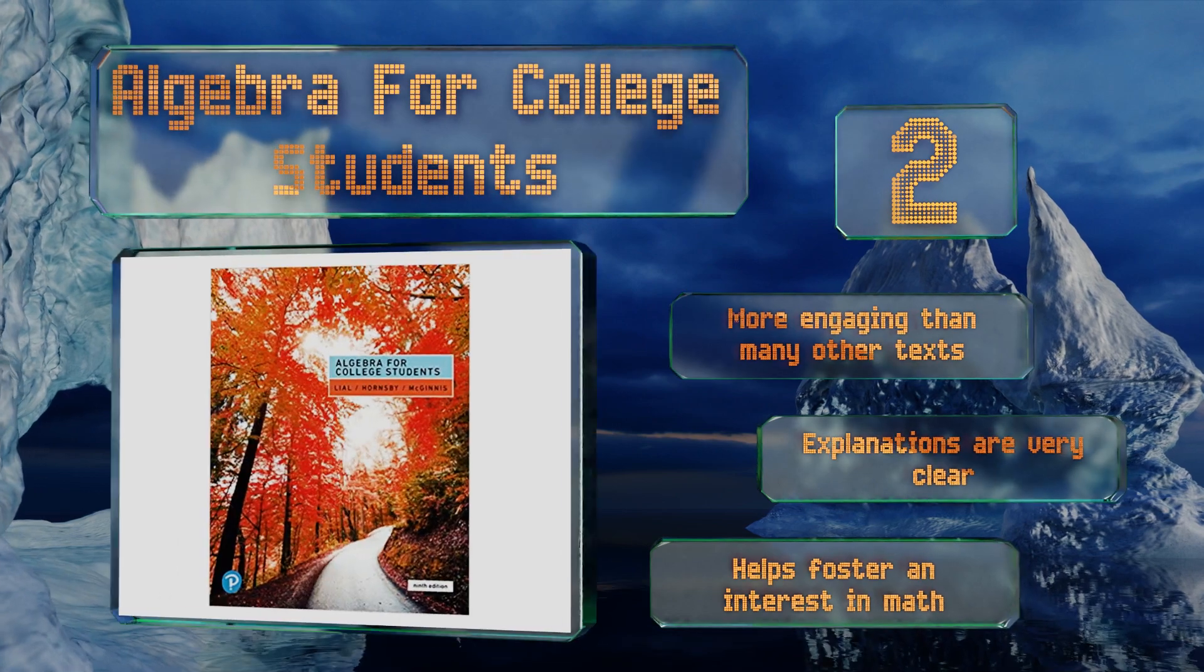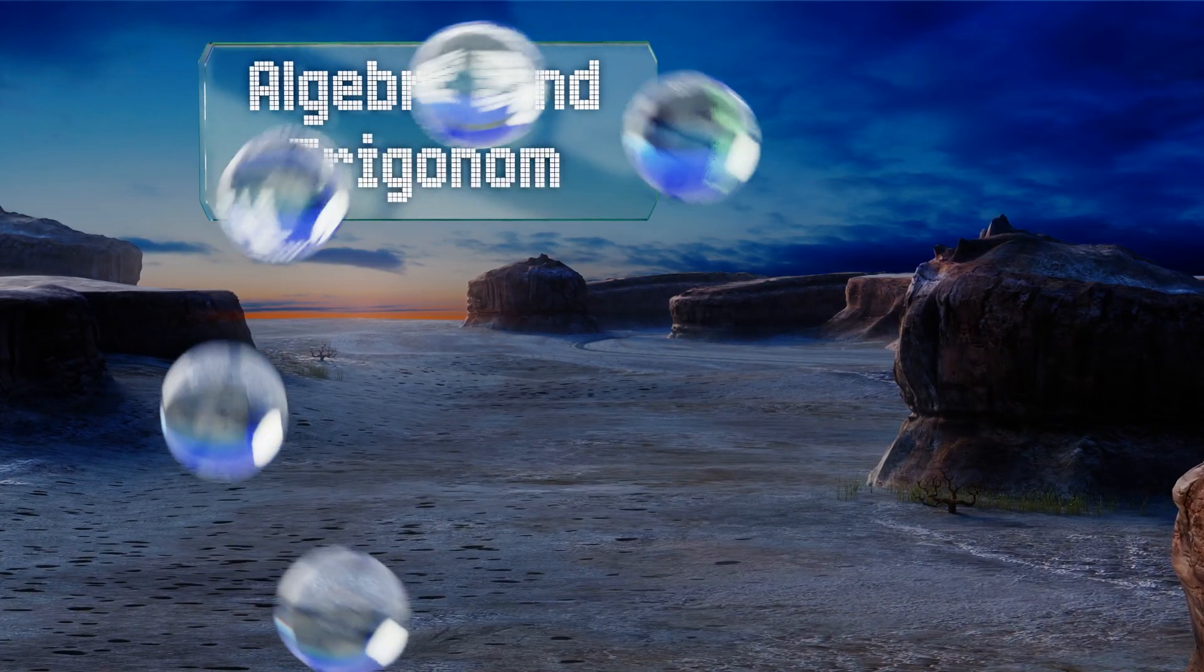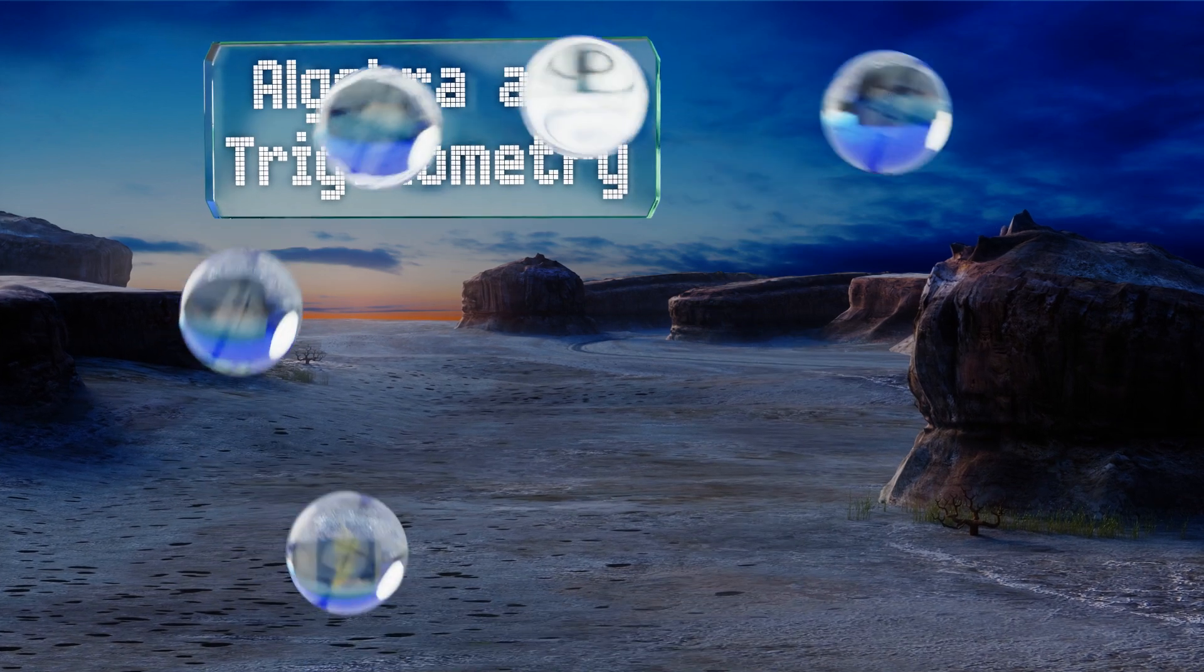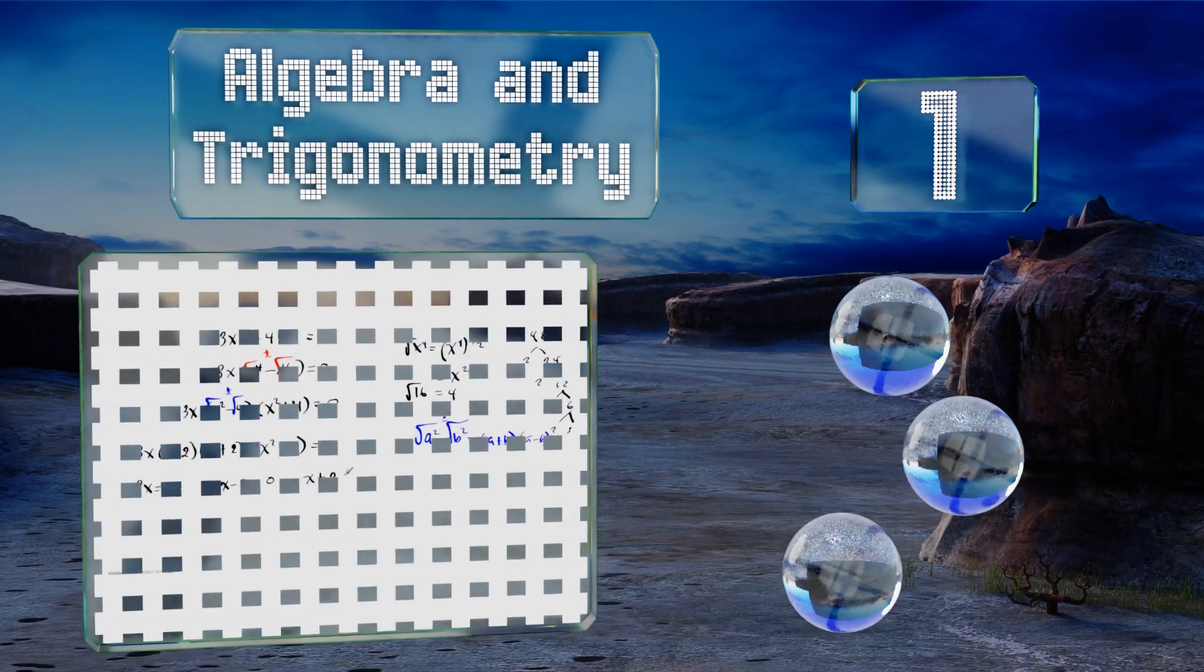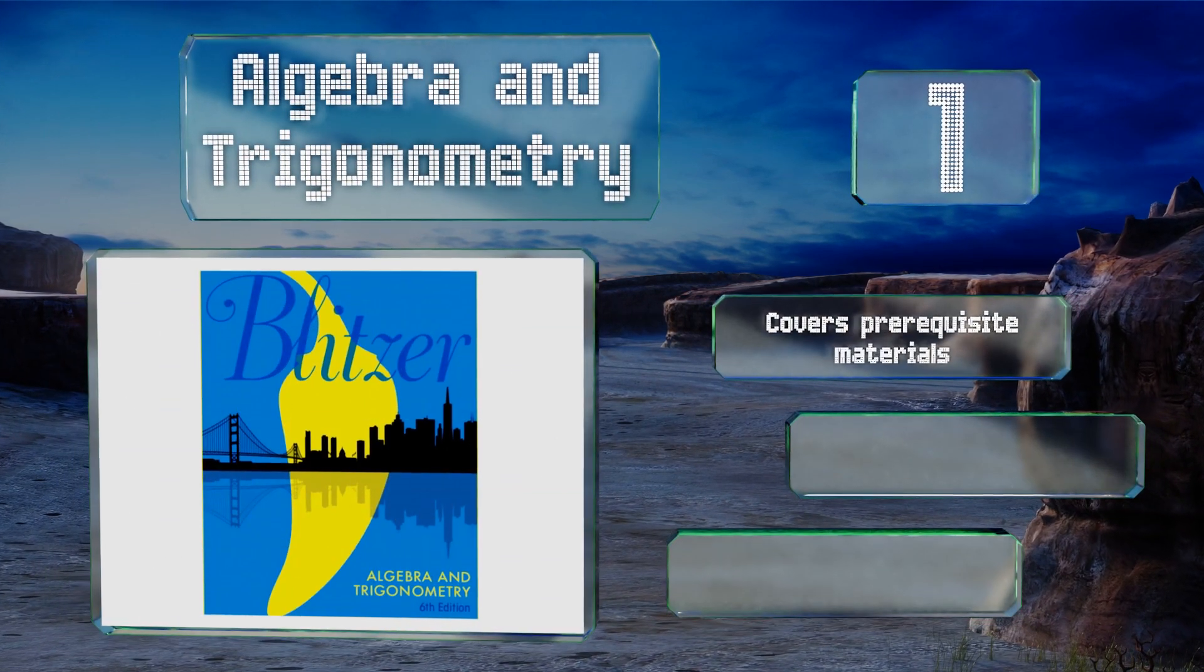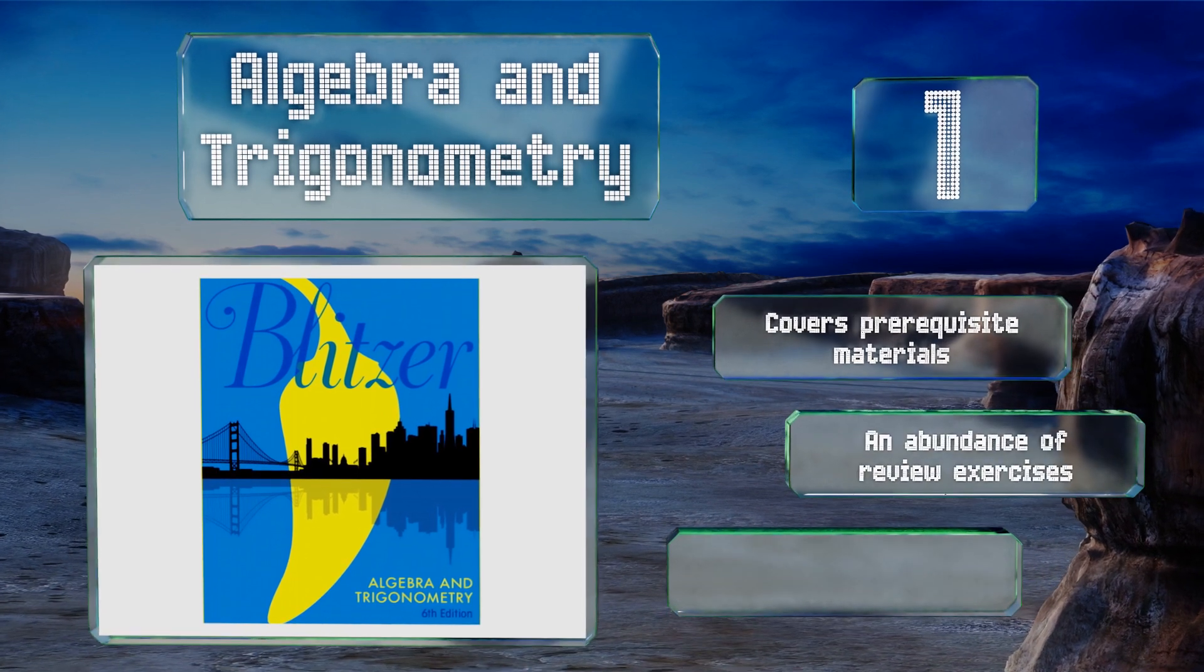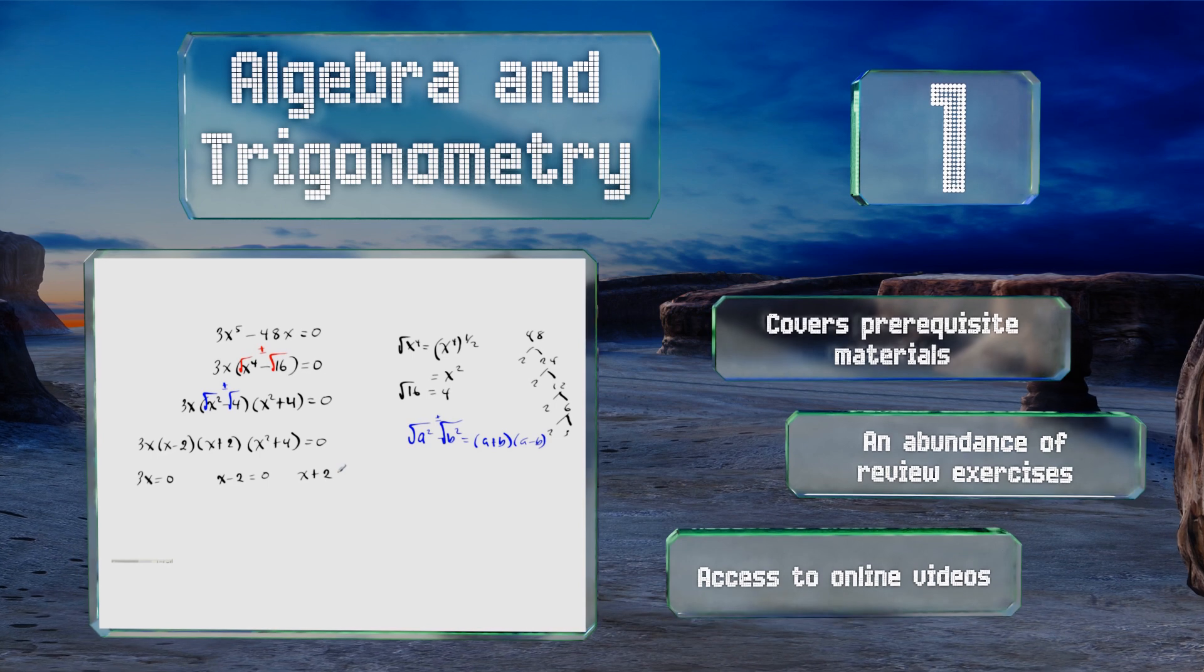Coming in at number one on our list, Robert F. Blitzer, the author of Noel Pearson Education's Algebra and Trigonometry, uses topics like inflation, student loan debt, and the average sleeping hours of college-aged individuals to keep learners interested in the concepts being taught. It covers prerequisite materials and there's an abundance of review exercises. It provides access to online videos too.